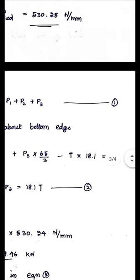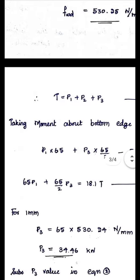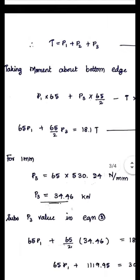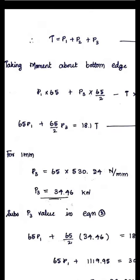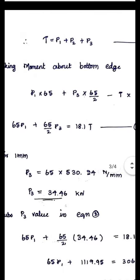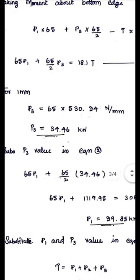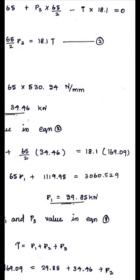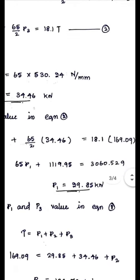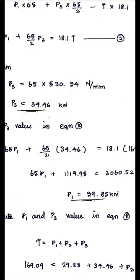There are three unknowns: P1, P2, and P3. We already found P3 = 34.46 kN, and T = 168.09 kN. Substituting P3 and T into equation 2, the only unknown is P1. Solving equation 2 gives P1 = 29.85 kN.